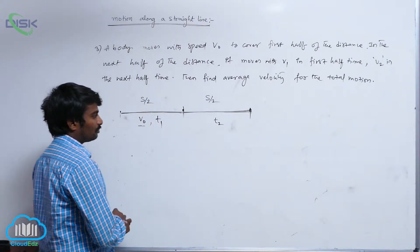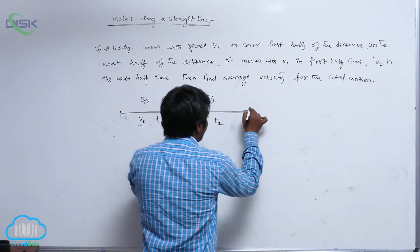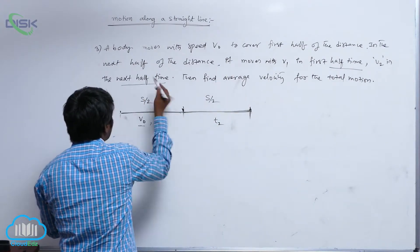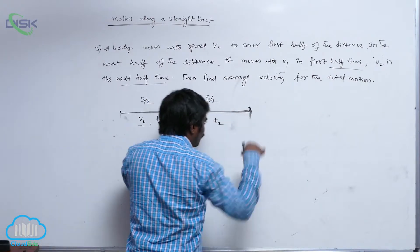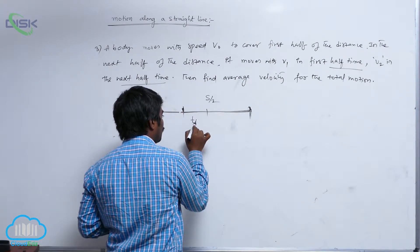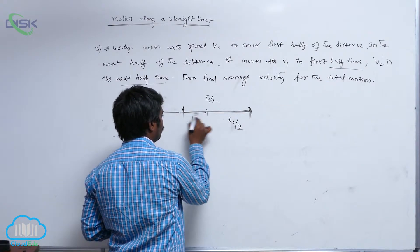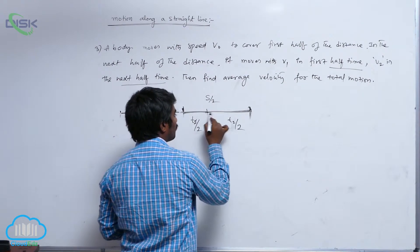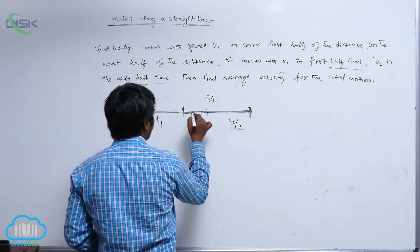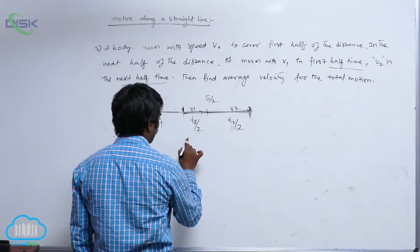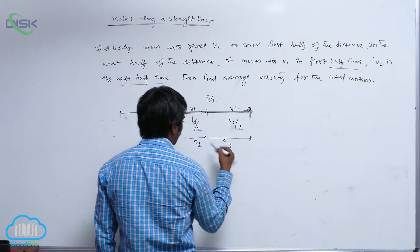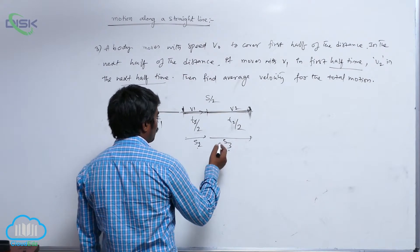The second half takes time t2. But this second part he is asking me to divide into two parts: the first half time part and the next half time part. So if the second part takes time t2, we divide it into t2/2 and t2/2. In the first half time it covers with velocity v1, and in the second half time with velocity v2. Let me call these displacements s2 and s3.